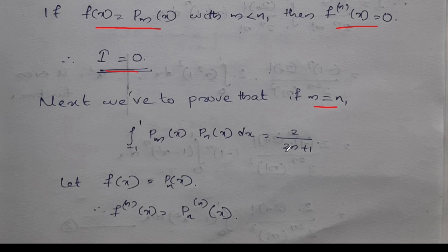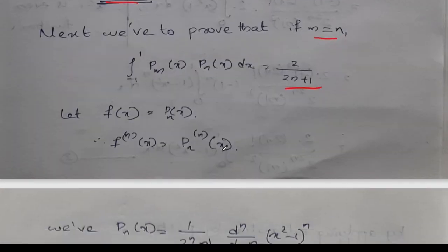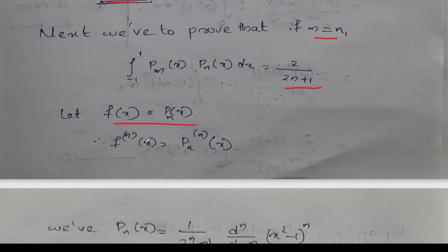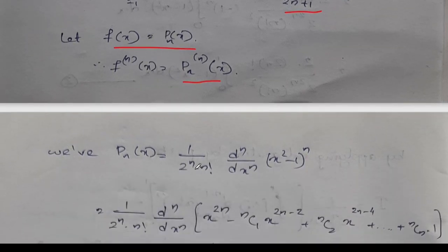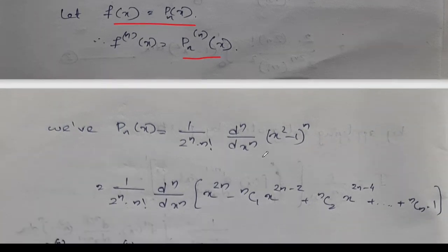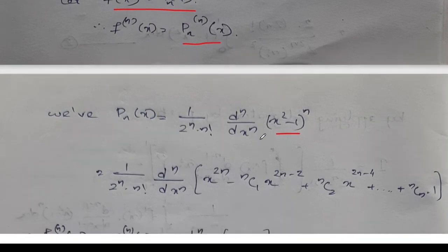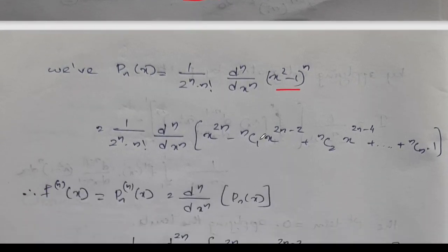The integral of Pn of x is 2 by 2n plus 1. That is why we need f of x to be Pn of x, because m is equal to n. We need 1 by 2 raised to n into n factorial into d raised to n by dx raised to n of x squared minus 1 whole raised to n. We expand the binomial expression: 1 by 2 raised to n into n factorial into d raised to n by dx raised to n of x raised to 2n minus nC1 x raised to 2n minus 2 plus nC2 x raised to 2n minus 4, etc.